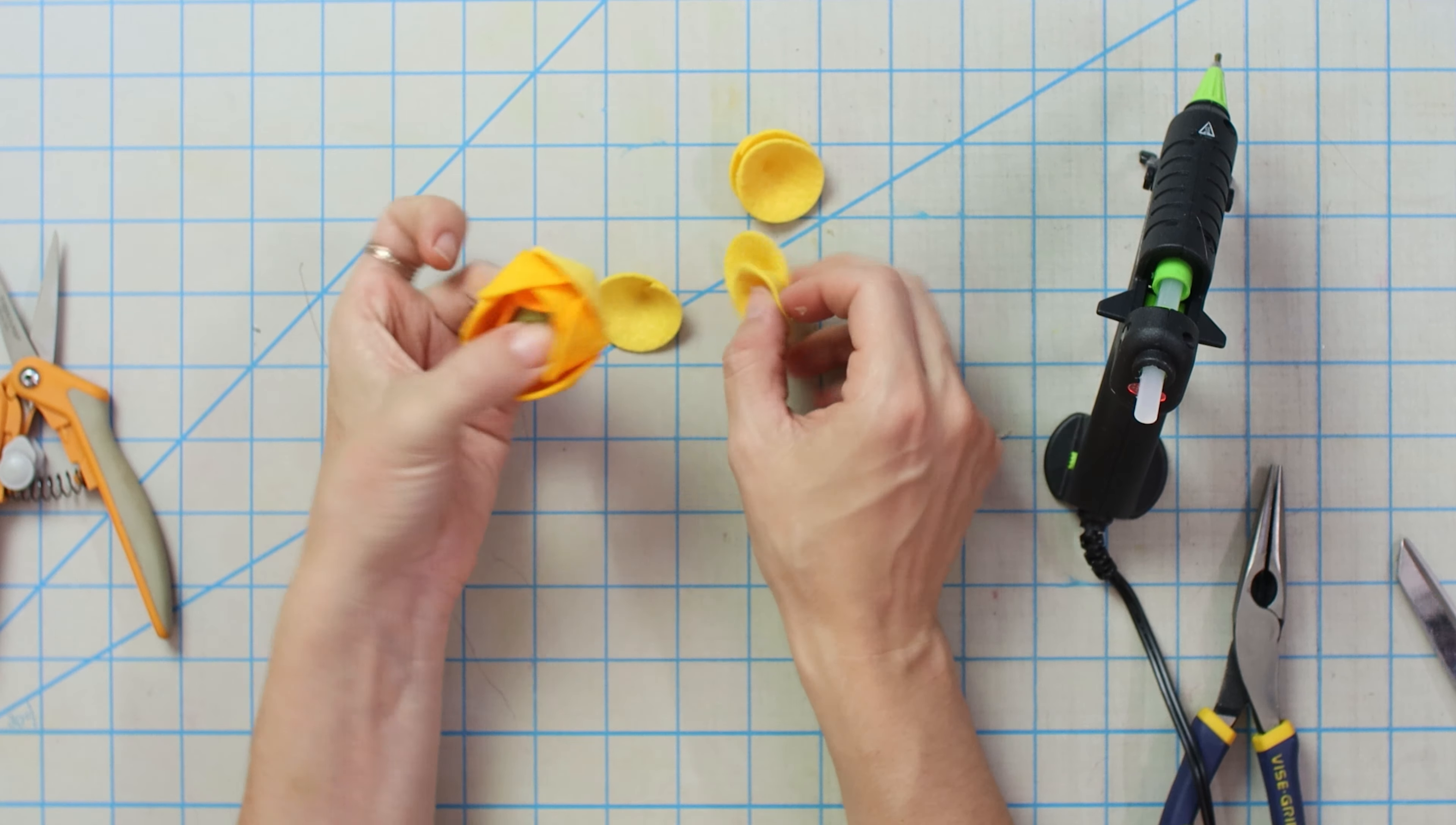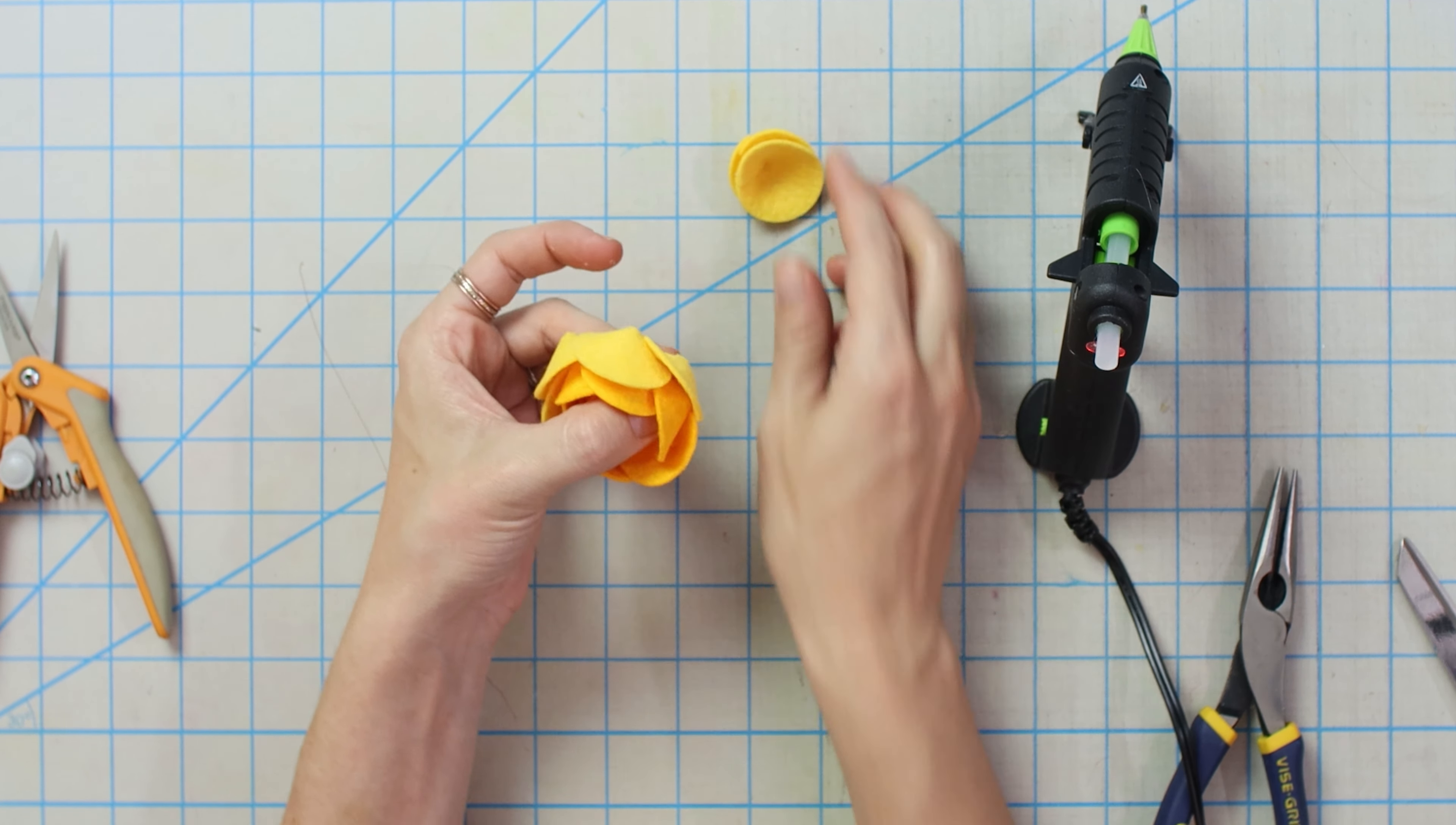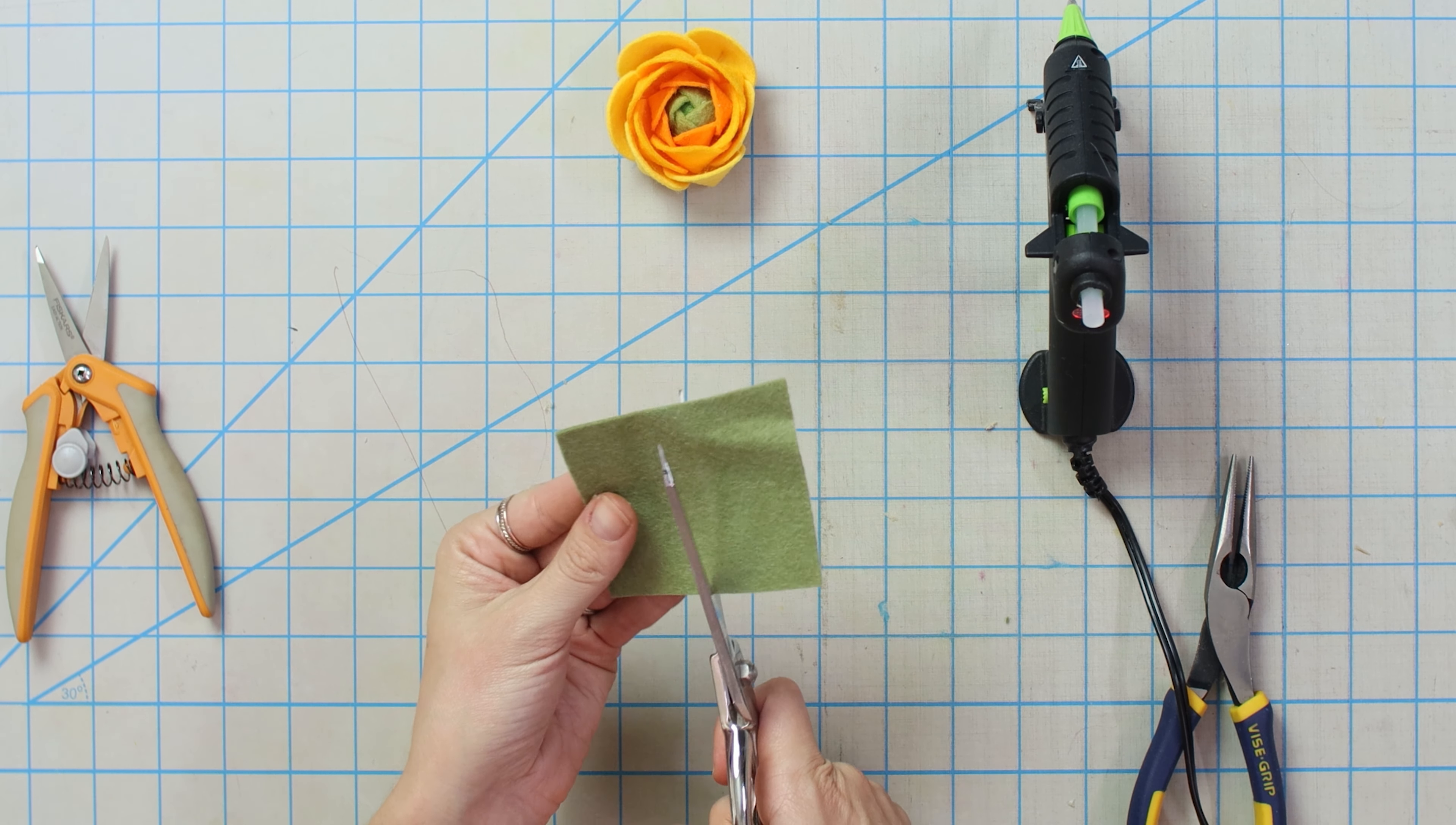So the last layer, so these were all tight, and then the last layer is in our sunshine yellow. We're going to kind of open up our flower a little bit. So we're going to put it a little bit lower and kind of fan it out a little bit. Nice. So now we have our ranunculus.